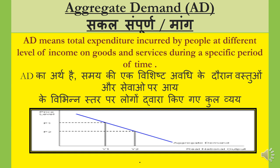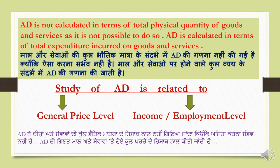First of all, we should know about what is aggregate demand — Samagra maang ya sampurn maang. Aggregate demand means the total expenditure incurred by the people at different levels of income on goods and services during a specific period of time. The total amount people spend within a given period on goods and services is what we call aggregate demand.